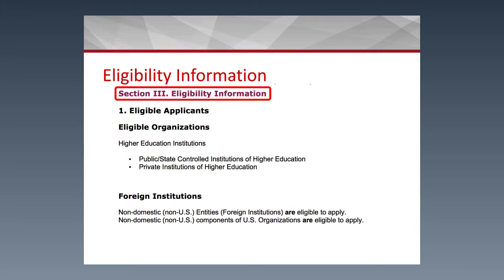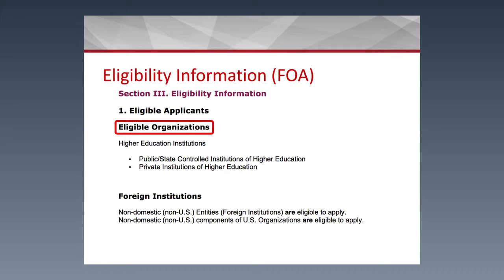This is the section on foreign eligibility, where you check whether or not an institution is eligible to apply. It reflects the type of institution — such as higher education institutions, which can be public, state, for-profit if the RFA pertains to that, or private institutions. This is also where you check your eligibility status and, if you're a foreign institution, how you would apply — whether as a domestic institution with a foreign component or as a direct foreign entity.